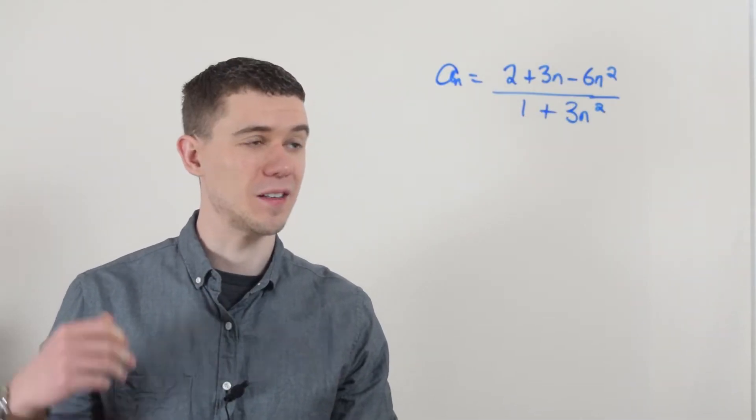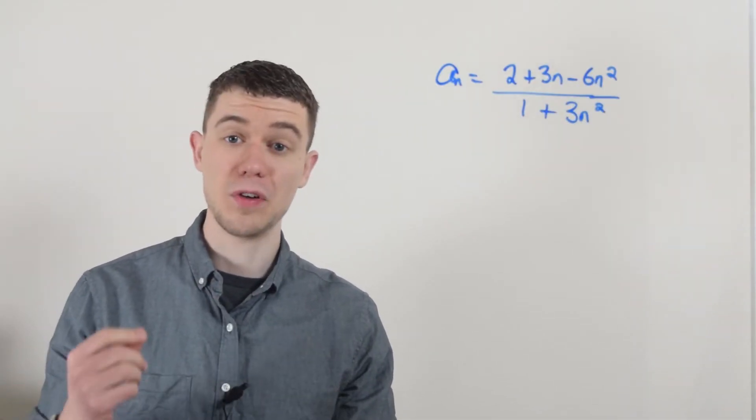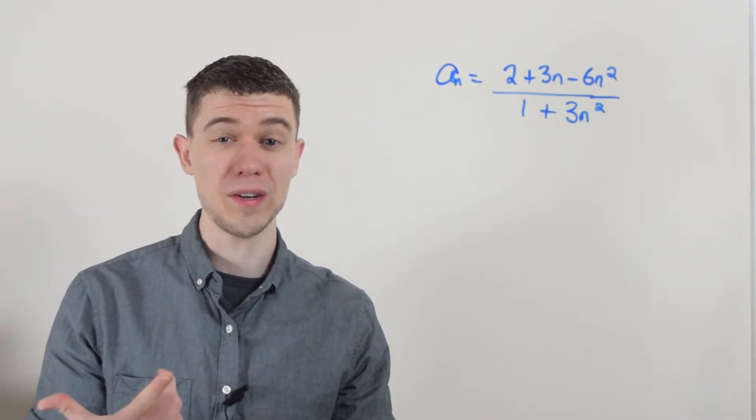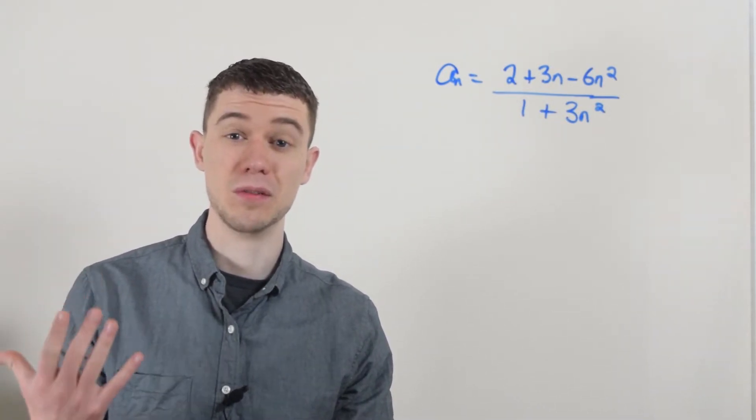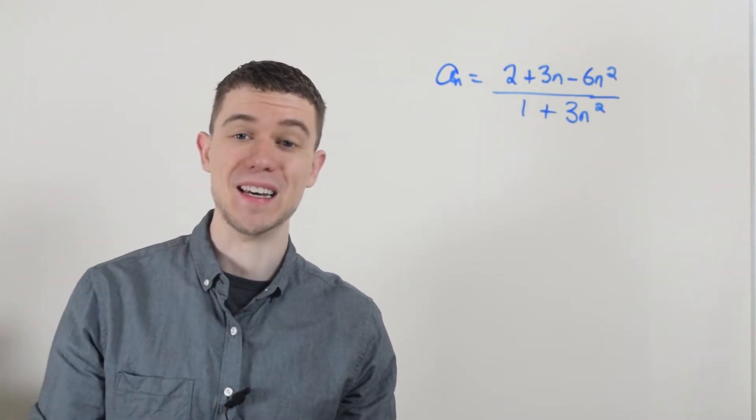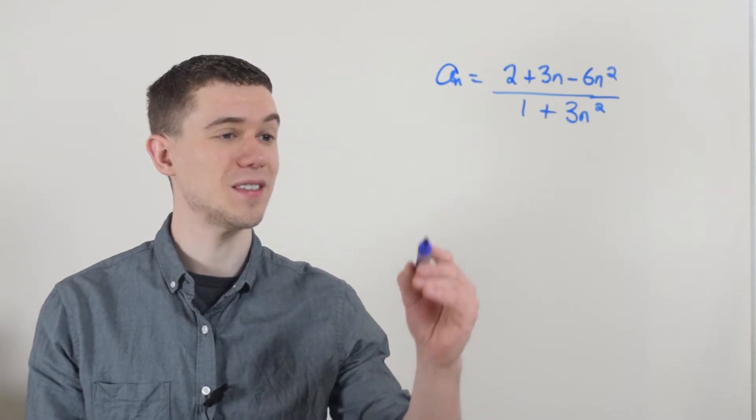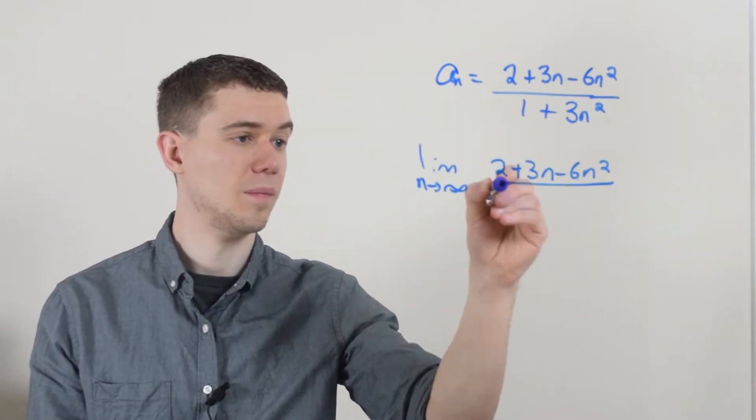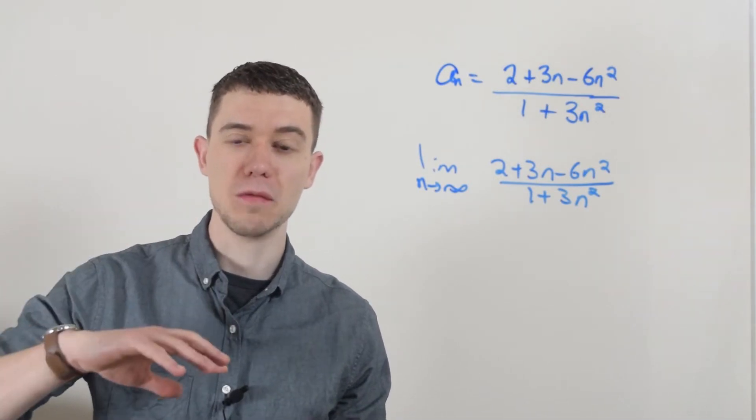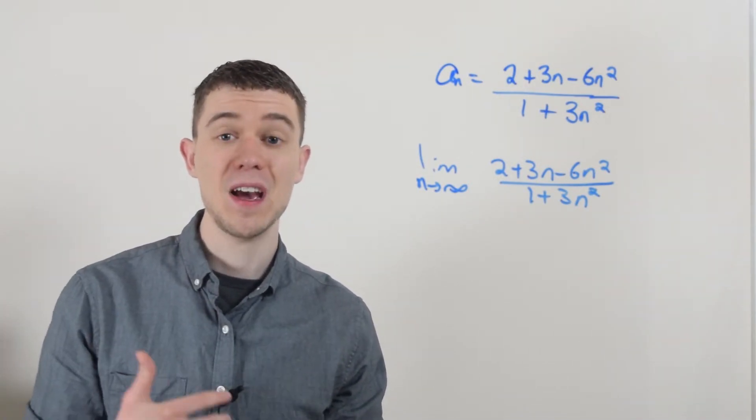Let's do a whole bunch of sequence examples. Here's our first example, here's a_sub_n, some sequence. How do we find whether our sequence converges or diverges? Remember that's usually the question. The way we typically do it is take the limit as n goes to infinity, so let's take the limit of this sequence.